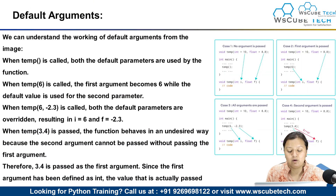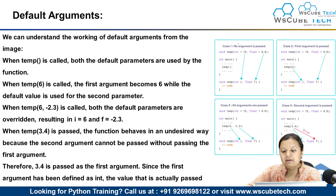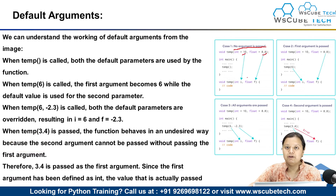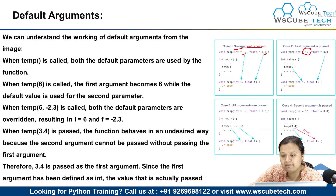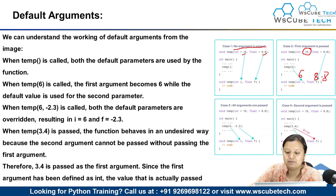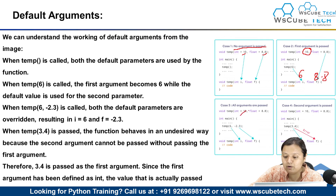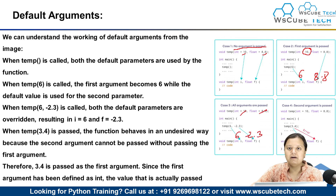If you see this diagram on your screen: when no argument is passed, the default values 10 and 8.8 will be used. When the first argument is passed as 6, then i equals 6 and the second value stays as default 8.8. When both arguments 6 and -2.3 are provided, then 10 and 8.8 will not be used — instead 6 and -2.3 are used. So if you provide an argument in the function call, your default values will be overridden.